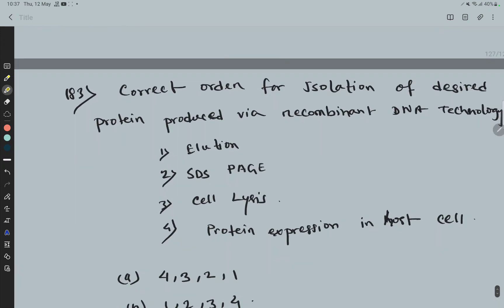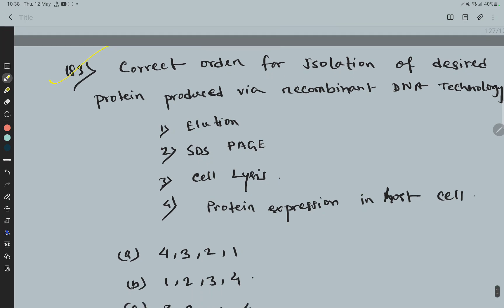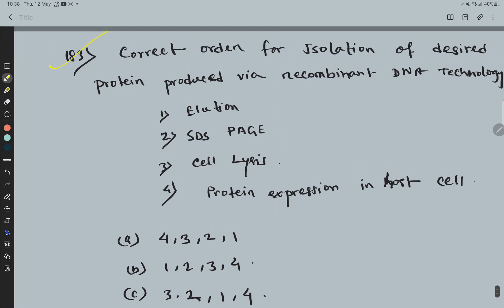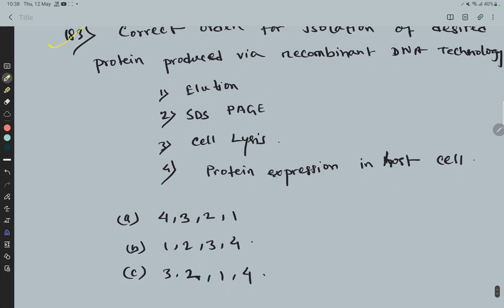Question 183: Correct order for isolation of desired protein produced via recombinant DNA technology. Option 1: Elution; Option 2: SDS PAGE; Option 3: Cell Lysis; Option 4: Protein expression in host cell. So these are the steps, here the correct order...